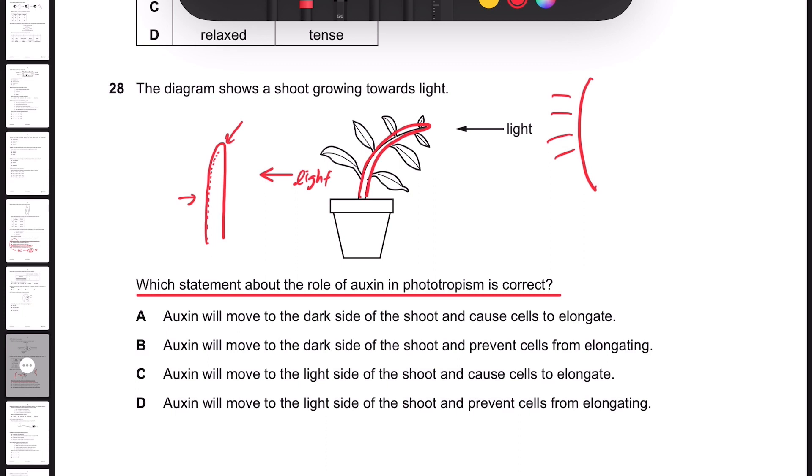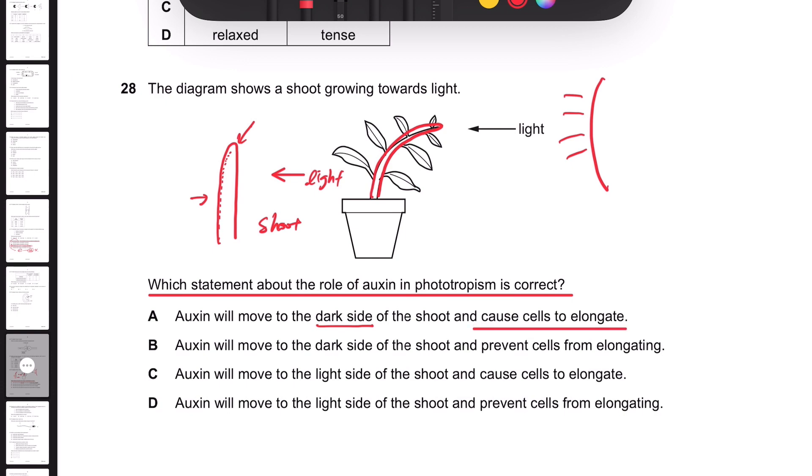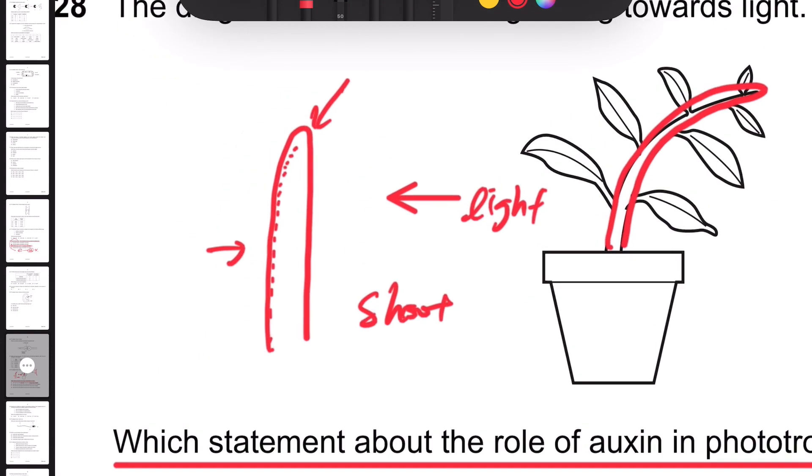So the auxin will move to the dark side of the shoot and causes cells to elongate. So all the cells on this side are becoming longer, and that's what is called growth.